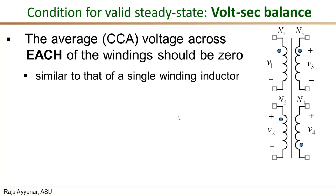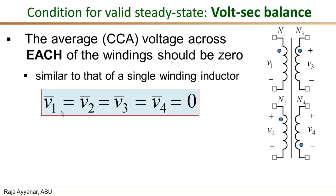For a four-winding transformer, the volt-second balance says that V1 average, V2 average, V3 average, and V4 average — where the bar on top denotes cycle-by-cycle average over a switching period — are all equal to zero. That is the requirement for steady-state operation.